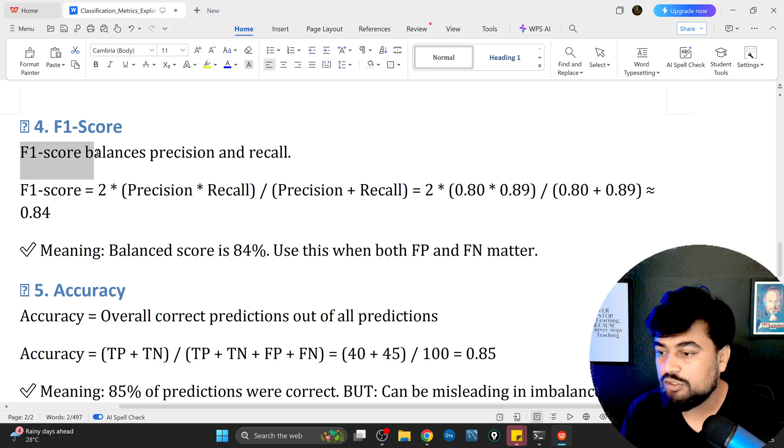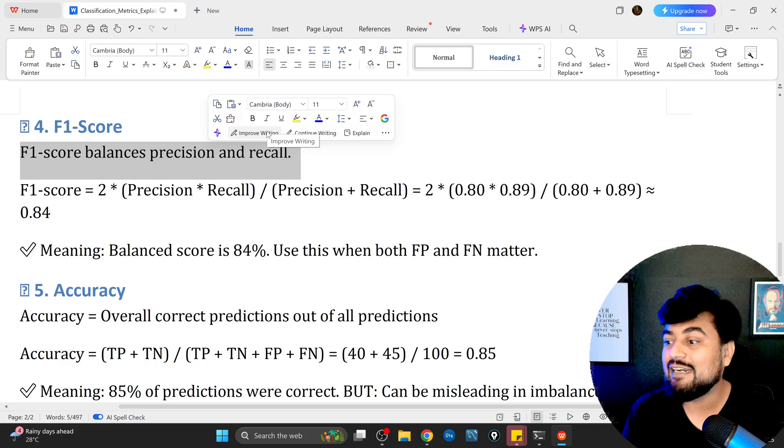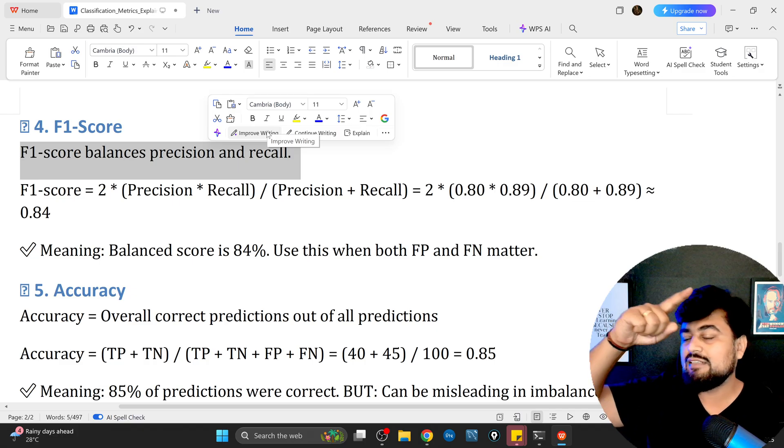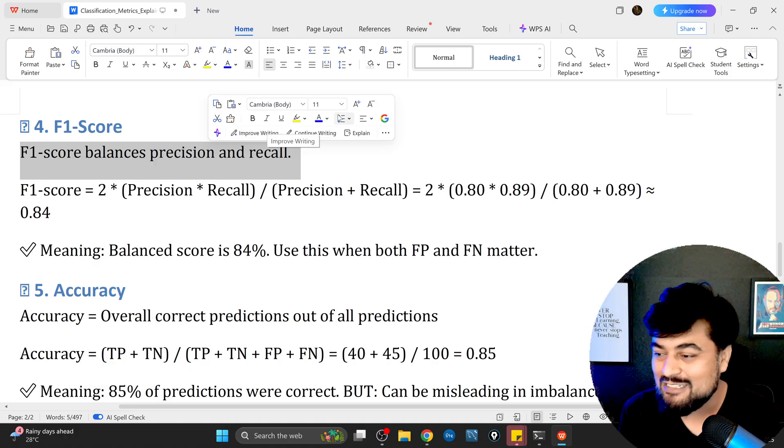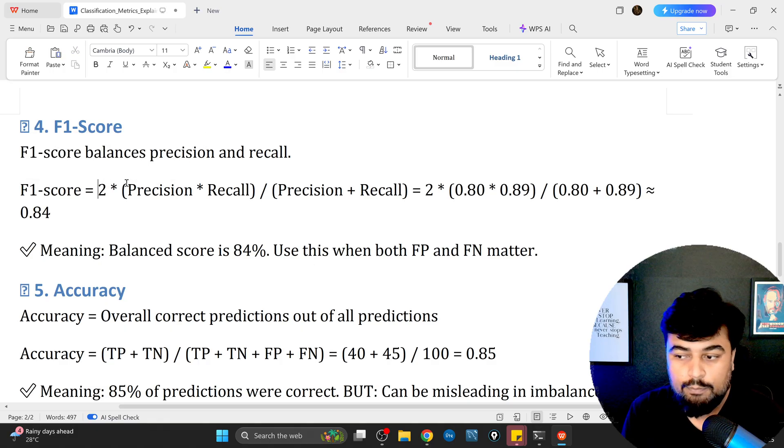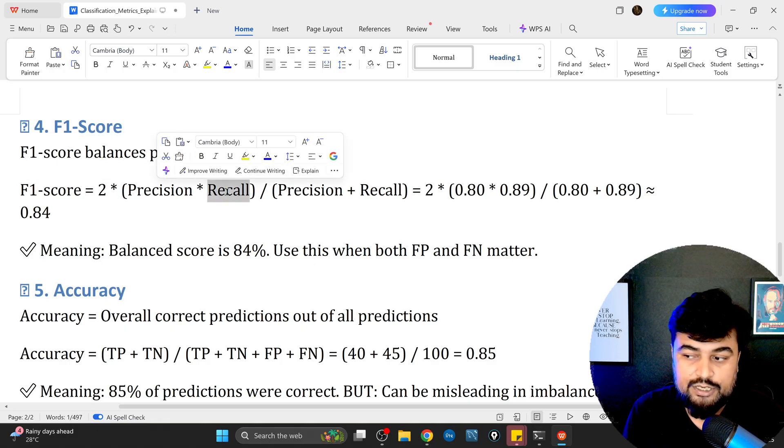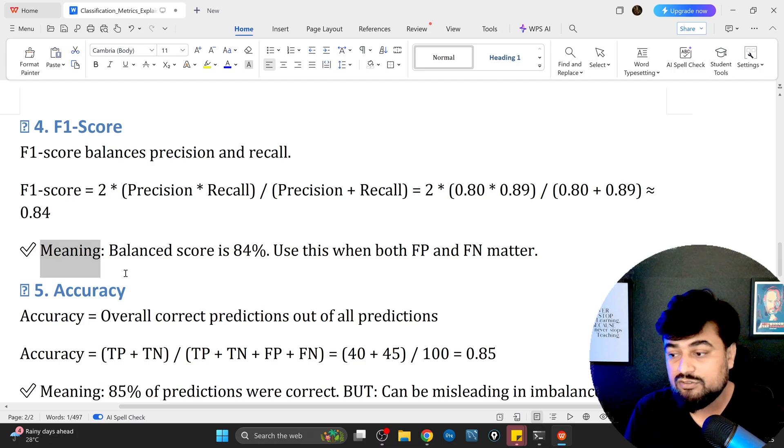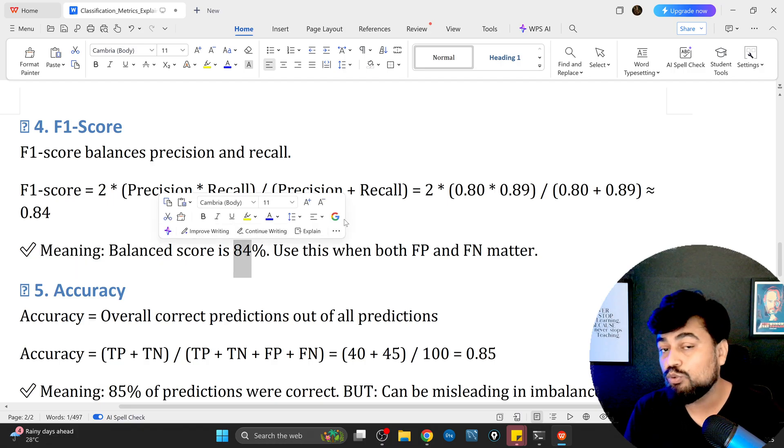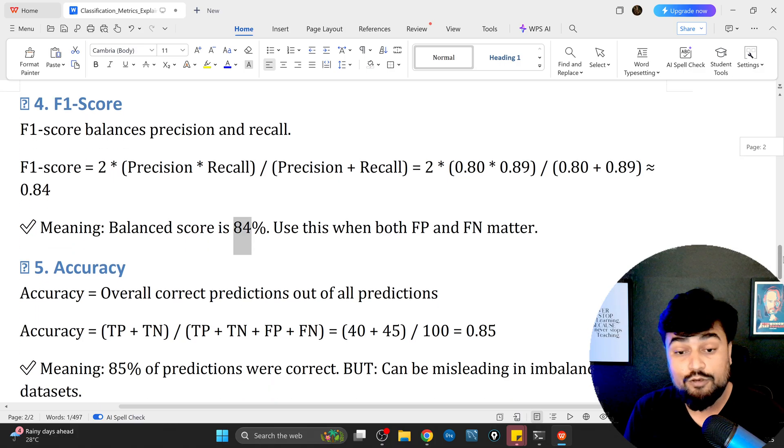What is F1 score? This balances the precision and recall. All these are interconnected: confusion matrix, then precision, then recall, then F1 score is a combination of both. F1 score is 2 multiplied by precision multiplied by recall divided by precision plus recall.